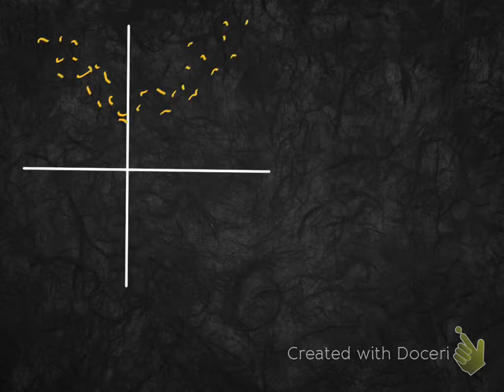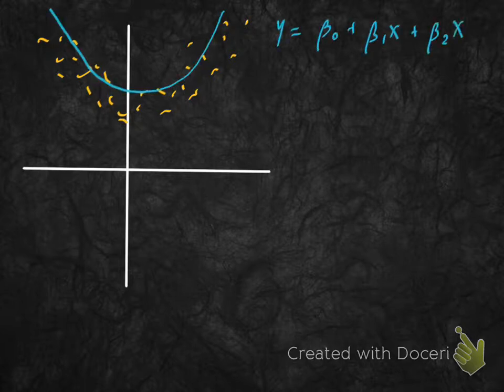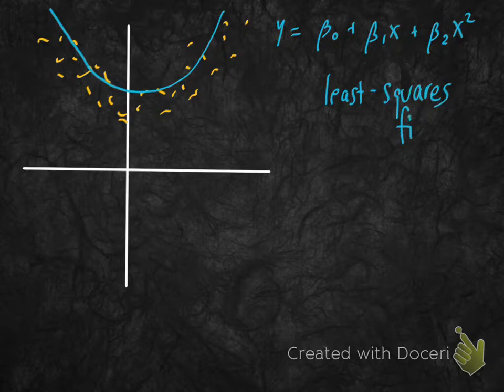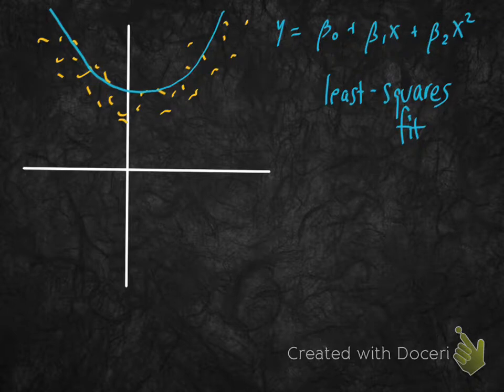Let's take a look at an example. Suppose I'm given some data points in ℝ², and suppose I want to find a curve that fits this — the least squares fit using a curve of the form y = β₀ + β₁x + β₂x². In linear algebra terms, I'm looking in the subspace generated by 1, x, and x², and I want to find the quadratic polynomial that best matches the given data.